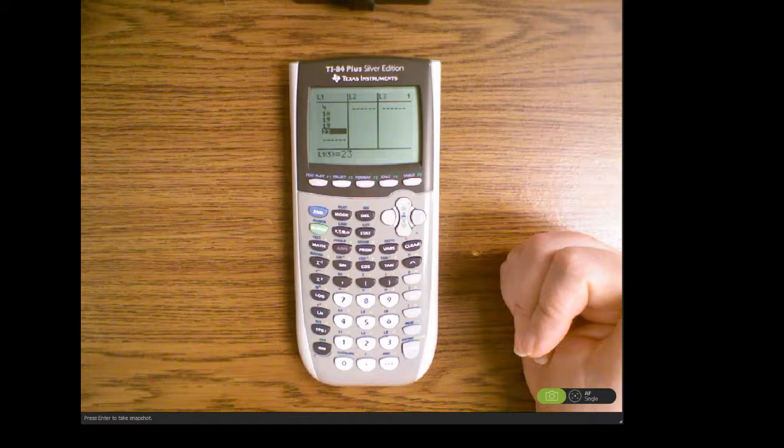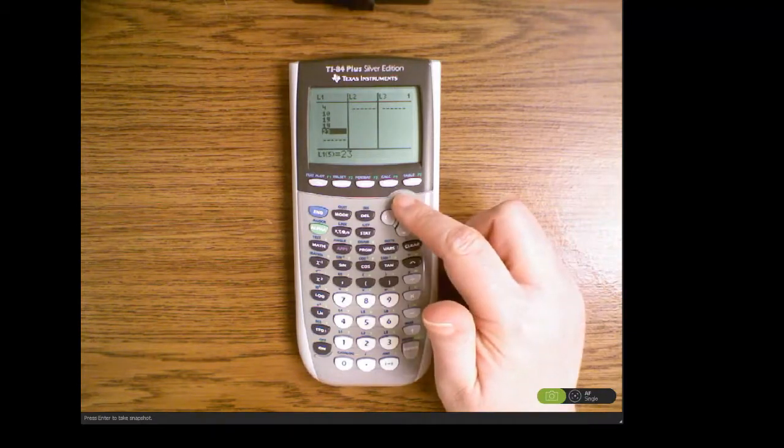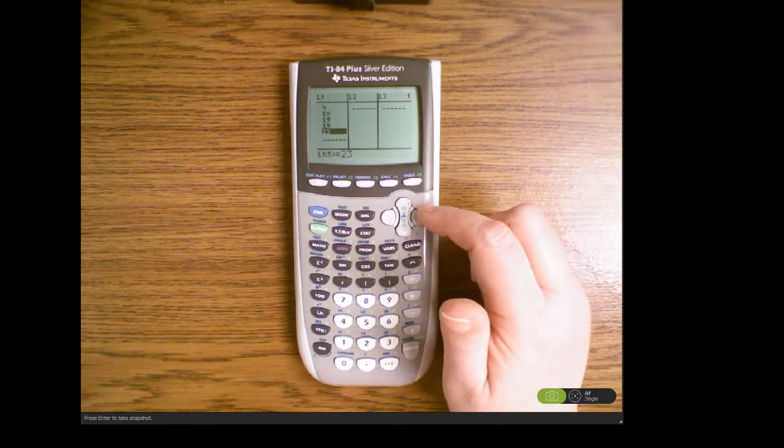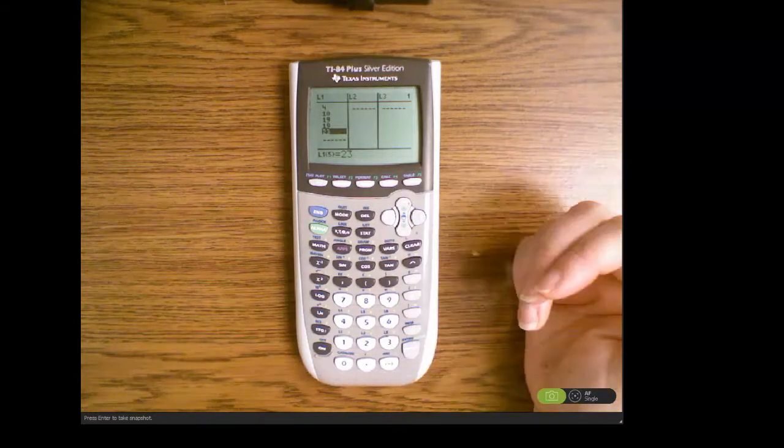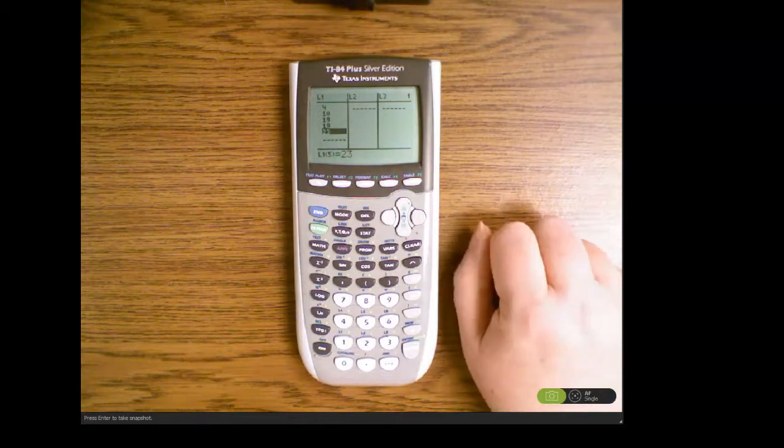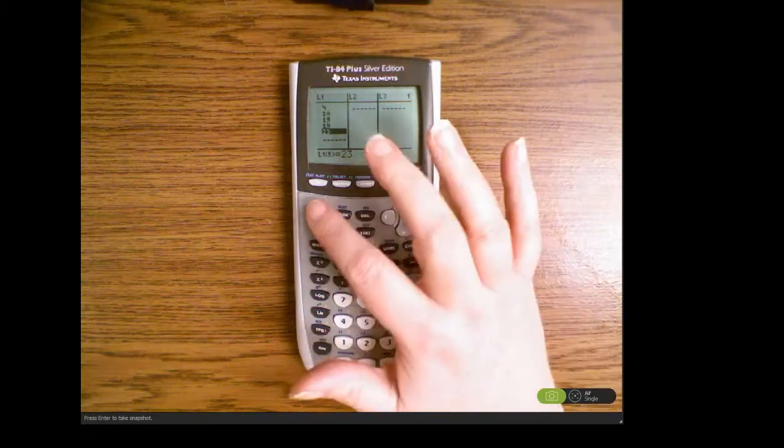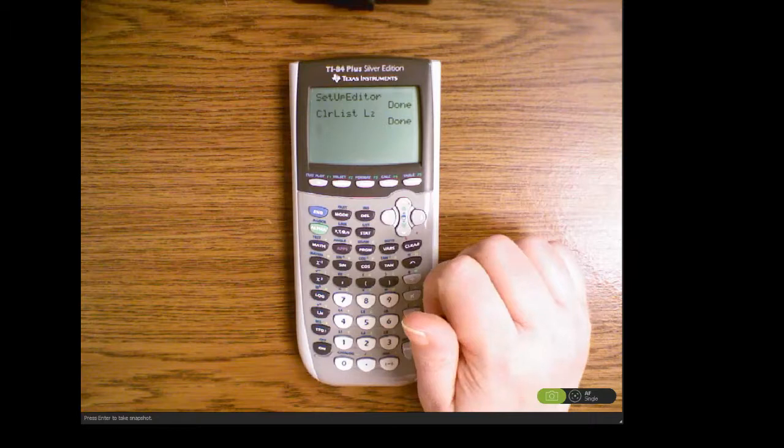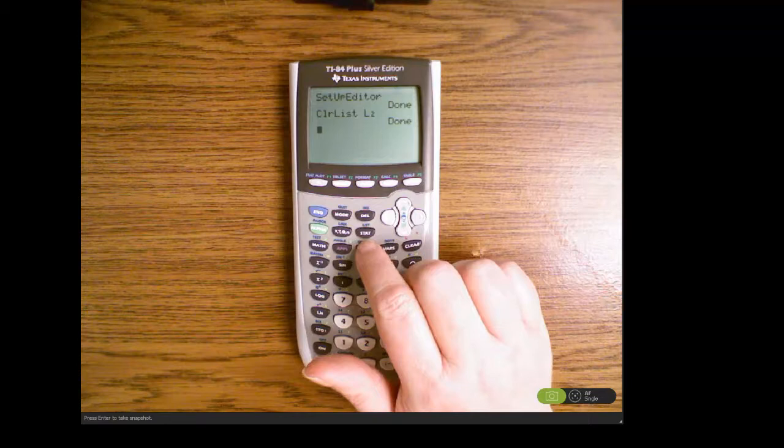Once you've edited your data, remember that what we want to do is to get the sum of this first column. This really goes along with the PowerPoint that works this out by hand. So we want the sum of list one, so we want to quit out of this menu, hit second quit, then press the list menu which is above the STAT key, so second STAT.